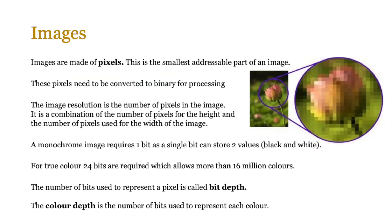Let's move on to images. Images are made up of tiny dots called pixels. If an image were created using only black and white, each pixel would either be black or white, with a binary value of 1 or 0. A pixel is the smallest addressable part of an image — a very small dot of color displayed with many others to create the image. These pixels need to be converted to binary for processing. The image resolution is the number of pixels in the image — a combination of the number of pixels for the height and width.